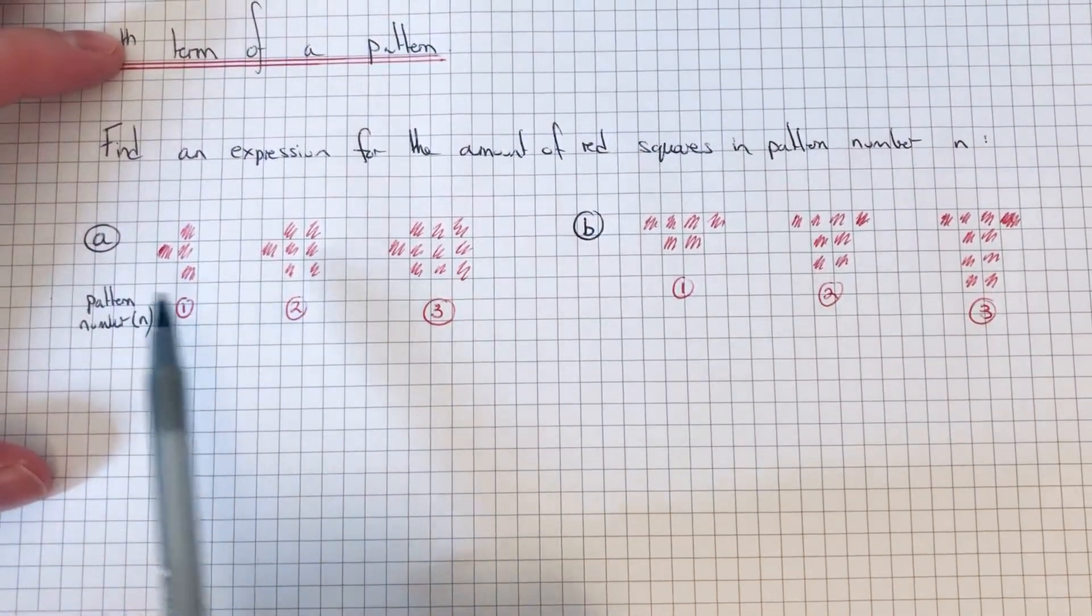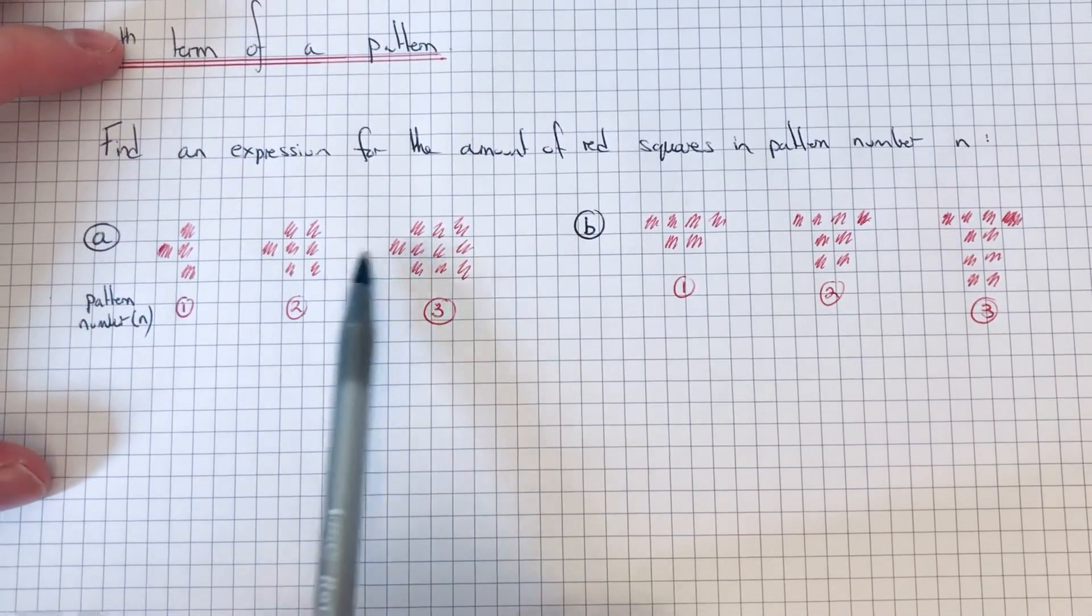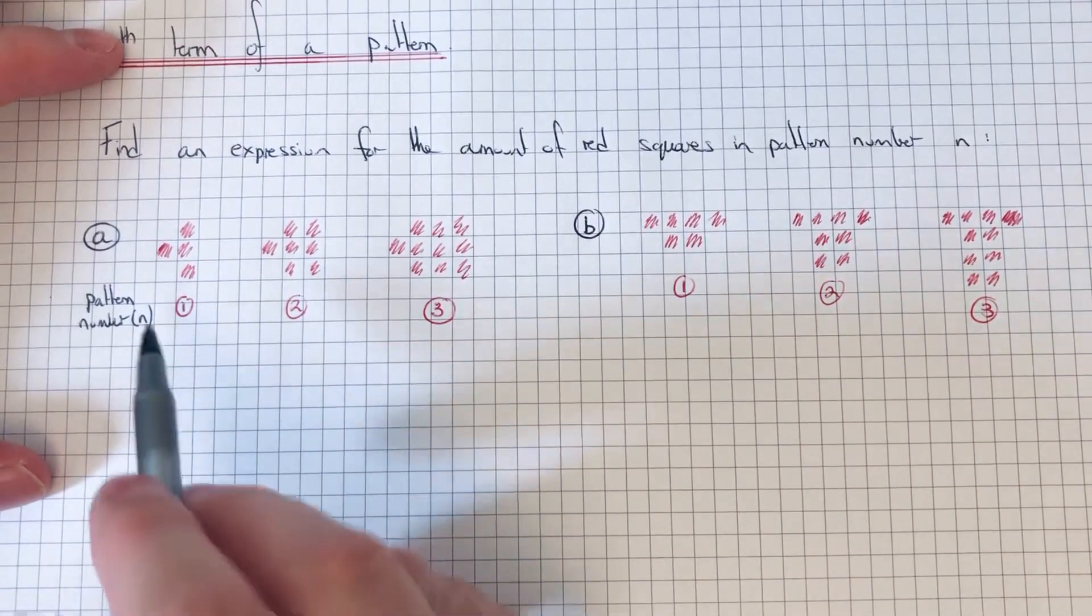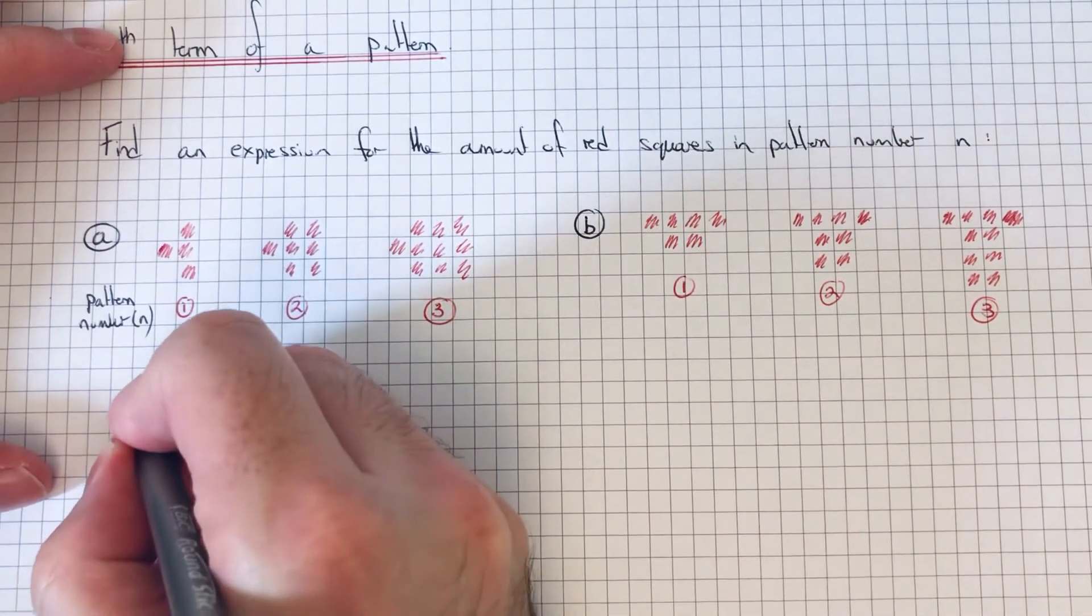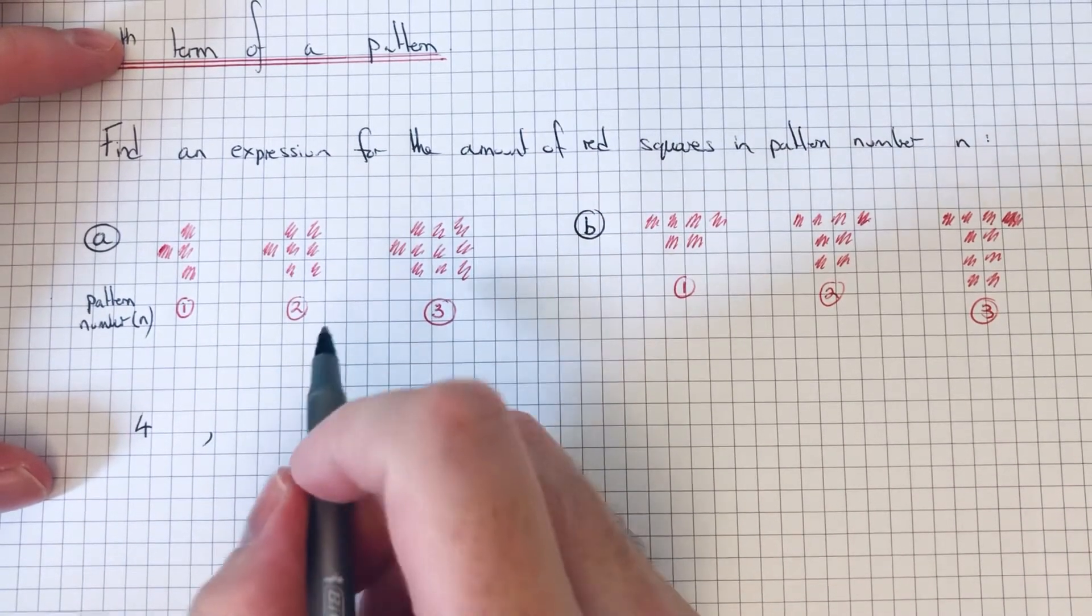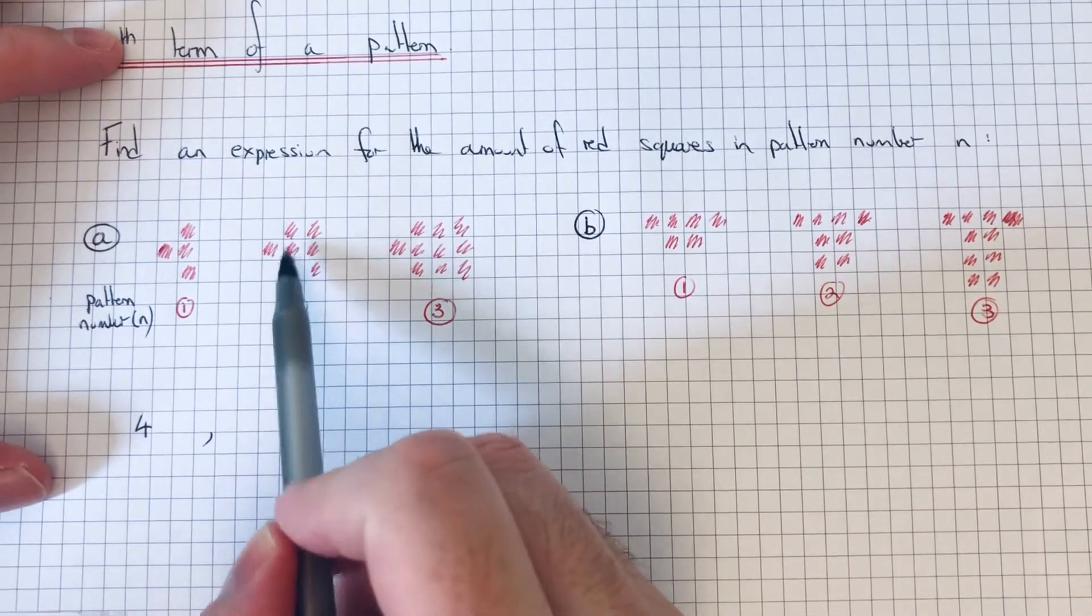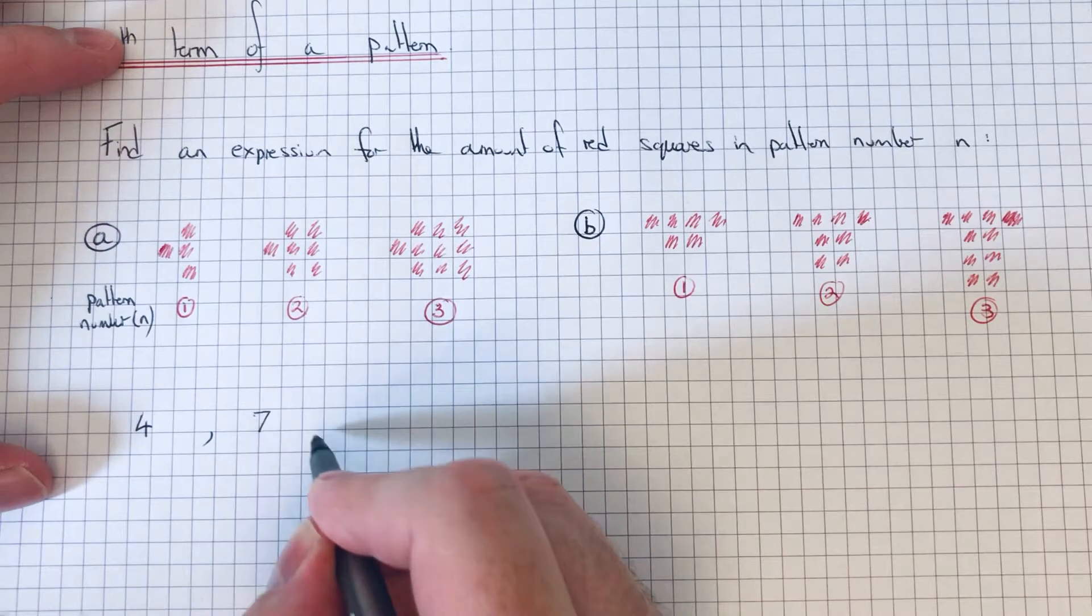The first thing you need to do is count how many squares you've got in each pattern number. In the first pattern we have four squares, in the second pattern we've got seven squares, and in the third pattern we have ten squares.